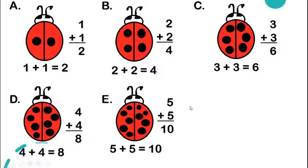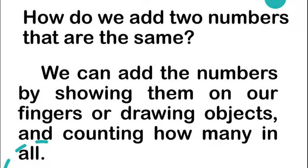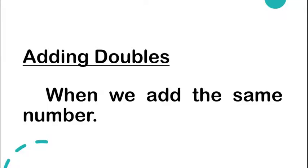Did you get the same answers? Very good. So how do we add two numbers that are the same? Always remember, we can add numbers by showing them on our fingers or by drawing objects, just as we did with the ladybug's spots, and count them all to find the total sum. When we add the same number — the same addend — that is what we call adding doubles.